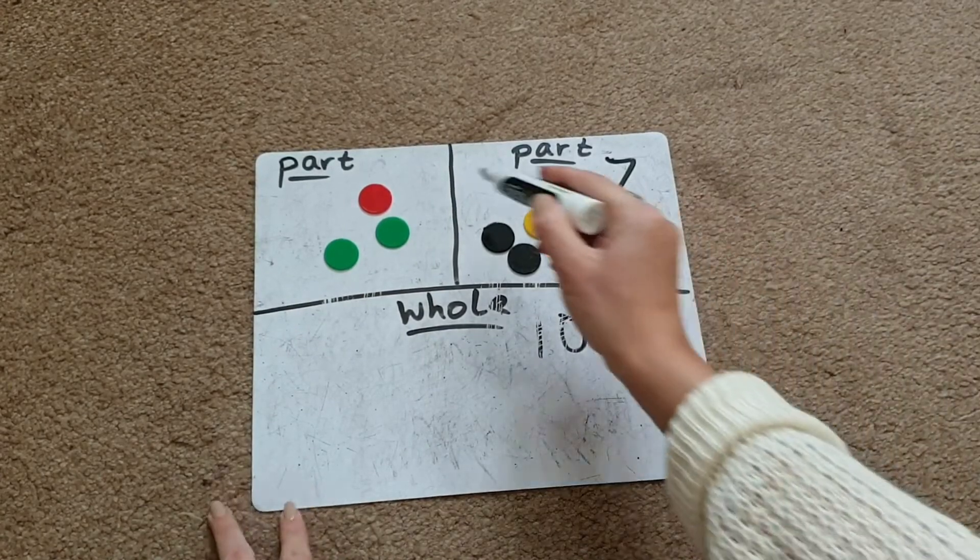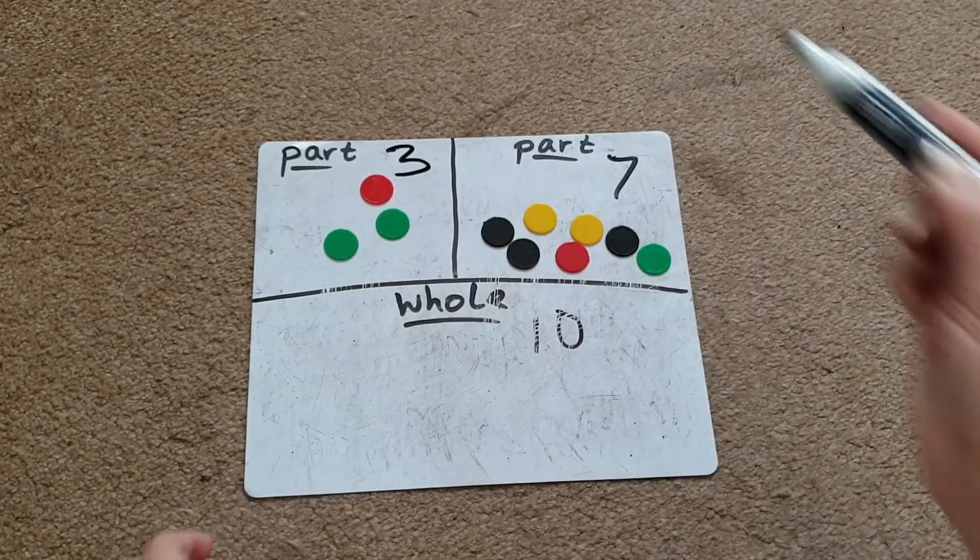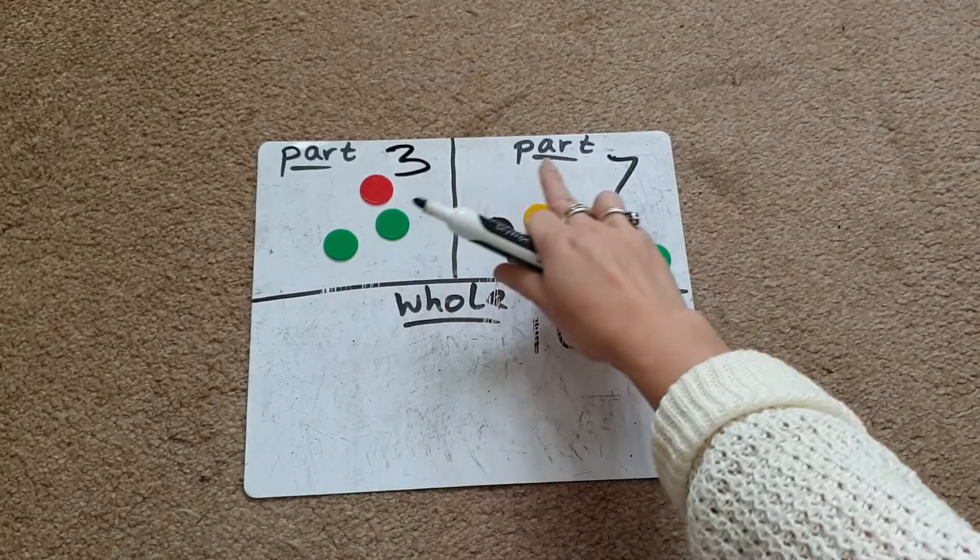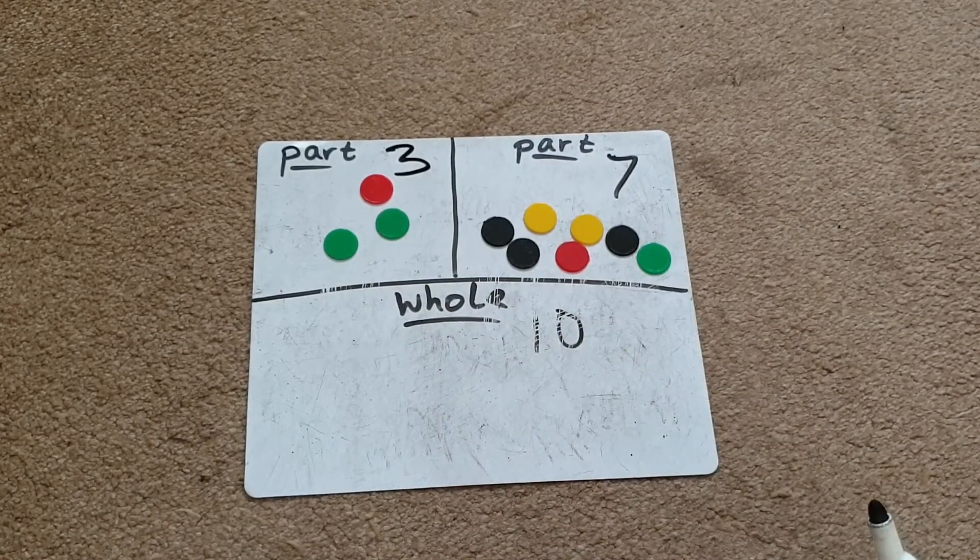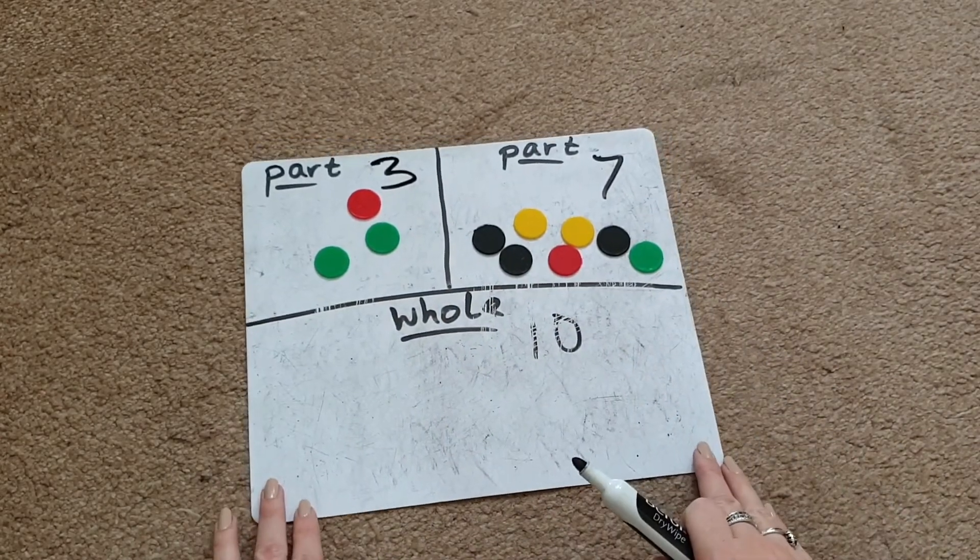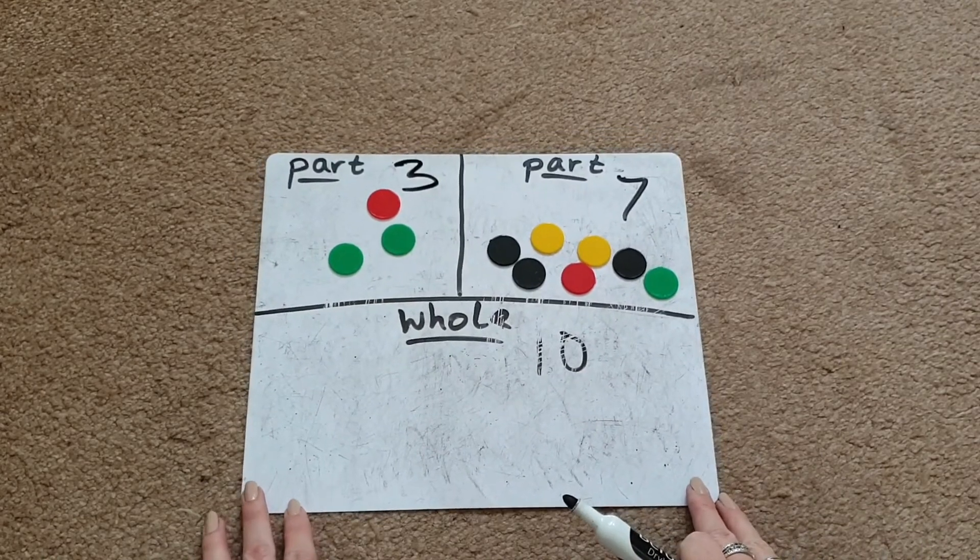So we can write in the number 3 to show that 3 and 7 make 10. That's a really good way of using the part-part-whole model to teach subtraction.